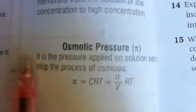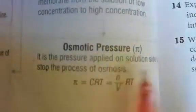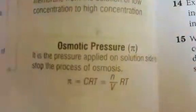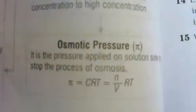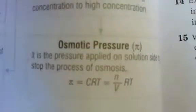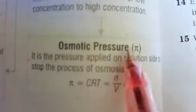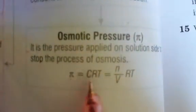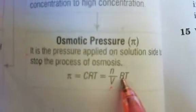Osmotic pressure is the pressure applied on the solution side to stop the process of osmosis. To stop osmosis from solvent to solution, we apply an opposite pressure, which is called osmotic pressure. It is given by: π = CRT, where C = n/V, R is the gas constant, and T is temperature.